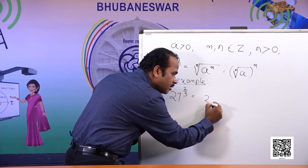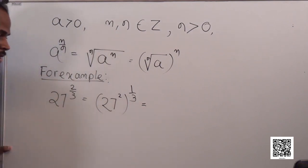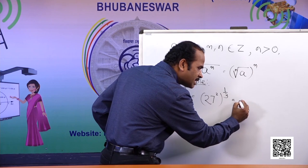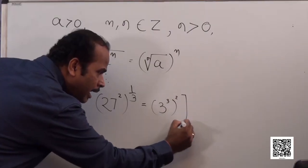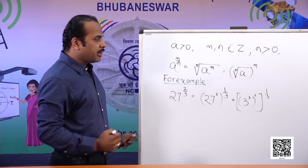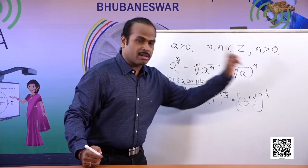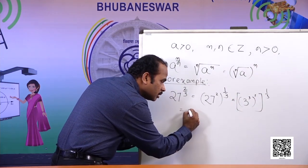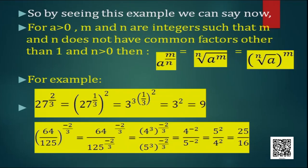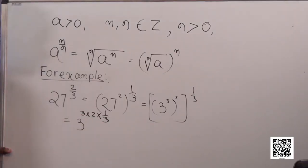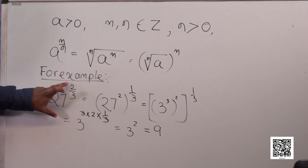To evaluate 27 to the power 2 by 3, I write it as (27²)^(1/3). Now 27 is 3 cubed, so this becomes (3³)^(2) whole to the power 1 by 3, which equals 3^(3×2×1/3). The 3s cancel, leaving 3 to the power 2, which equals 9. Therefore, 27 to the power 2 by 3 equals 9.